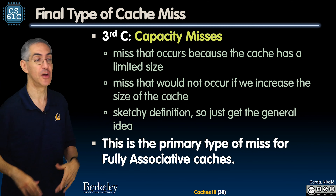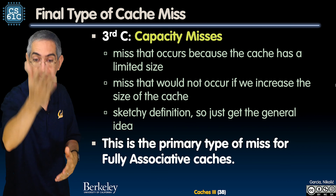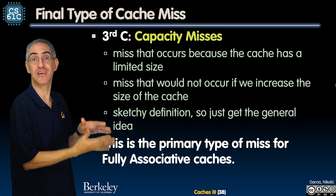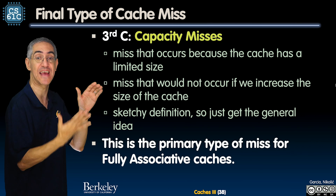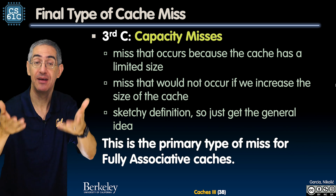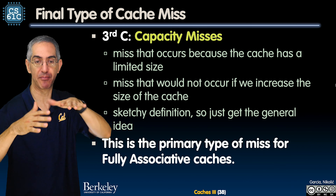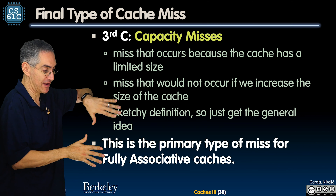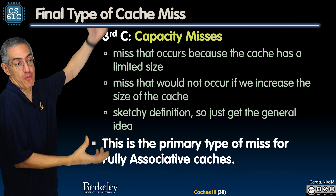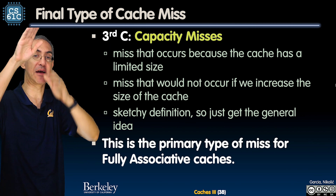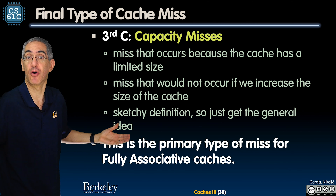In the long-term steady state, once you've visited everybody at least once, it's the capacity miss that really gets you. You've already taken the compulsory hit from every single memory block. But if my cache were infinitely big, I wouldn't have taken those capacity misses — I would have loaded them all in. If I had a fully associative cache that was 4 gigabytes or more, once I swept through all of memory, everything would be in the cache and I wouldn't have any more misses.